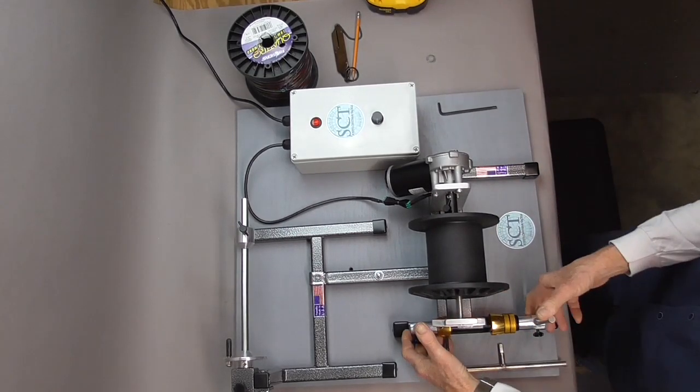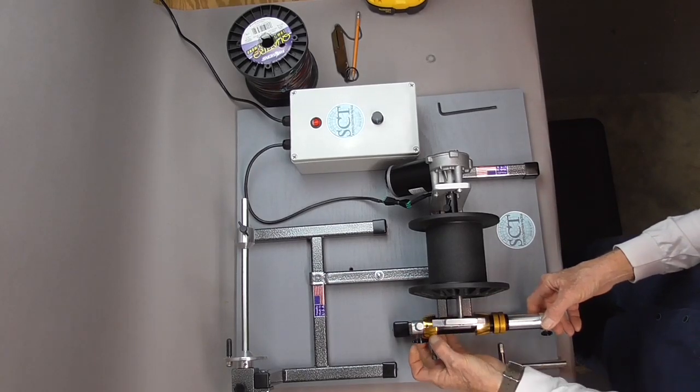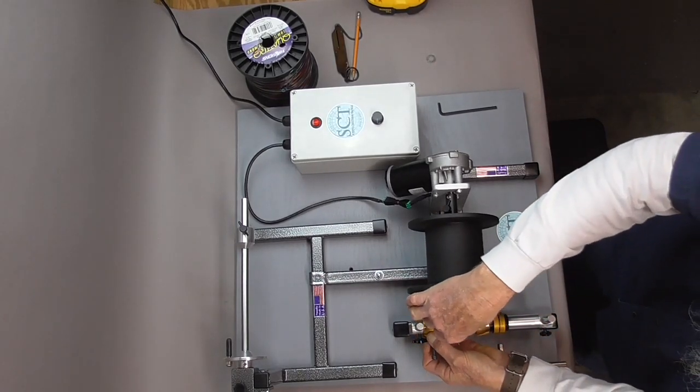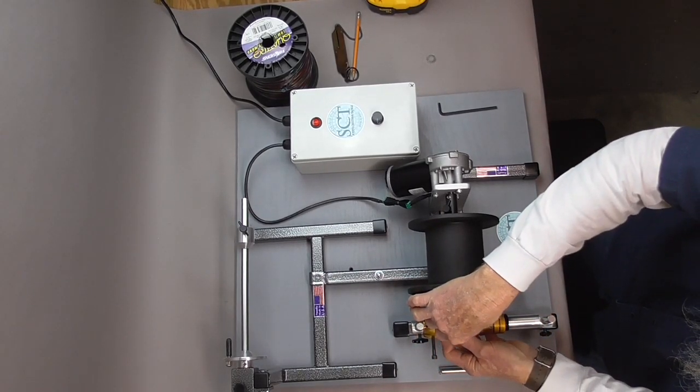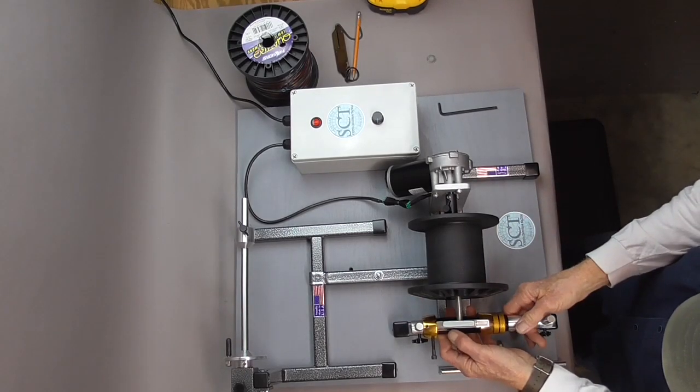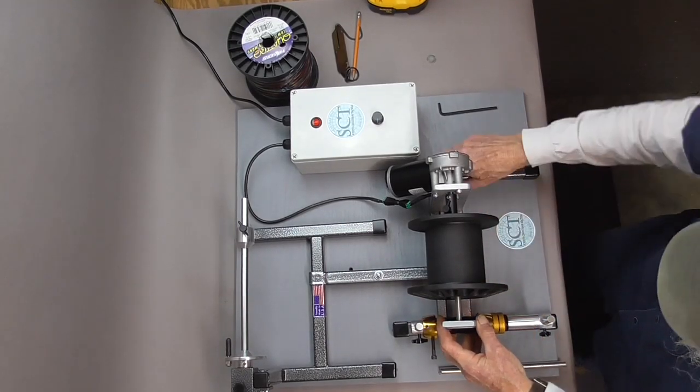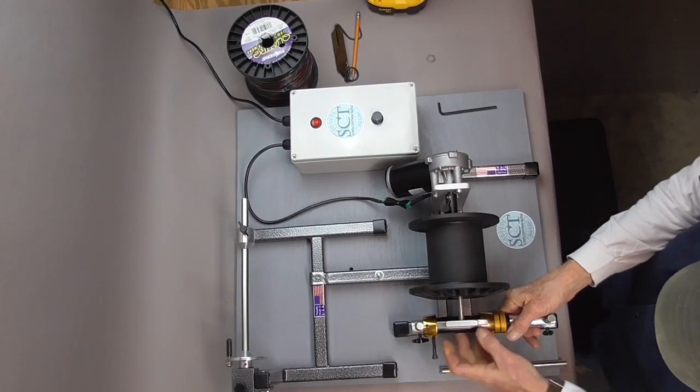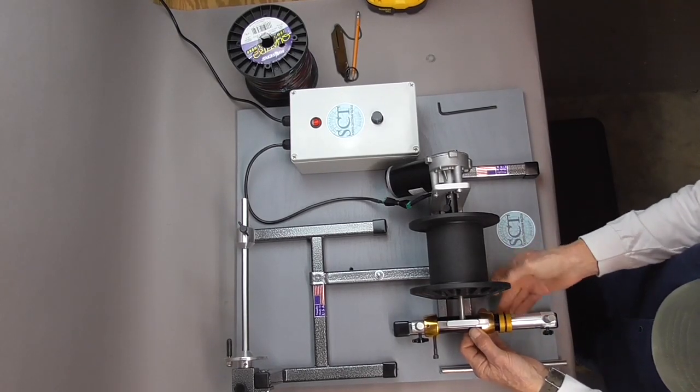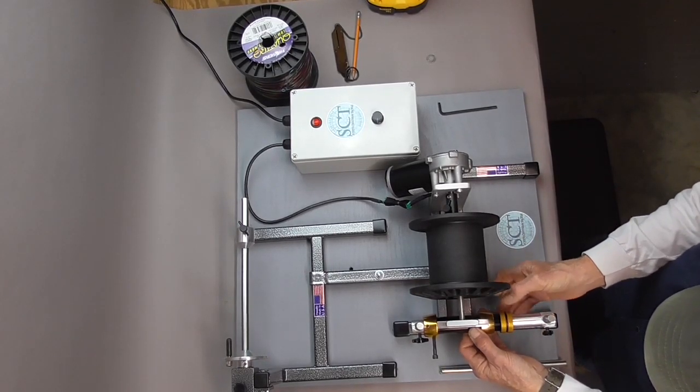I'm just bringing everything up, getting it roughly aligned, not tightening anything yet. Just getting everything kind of set in position. Move the rear clamp back on the reel seat.